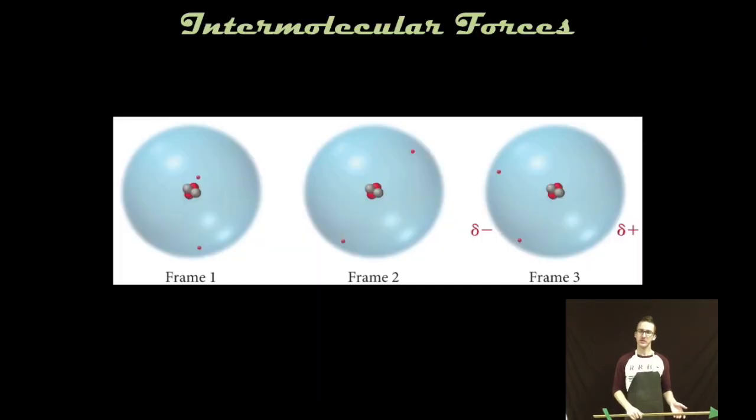So here are a couple of freeze frames of a helium atom and how the creation of an instantaneous dipole might exist. Notice in frame one and frame two the electrons are in different regions of the electron cloud. But in frame three both electrons are on the same side of the electron cloud creating a partially negative region and partially positive region. But it is instantaneous because in the next moment those electrons will have moved.